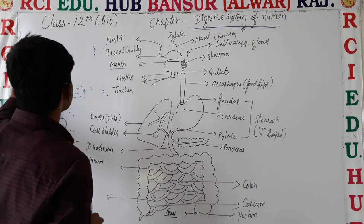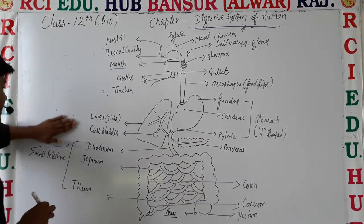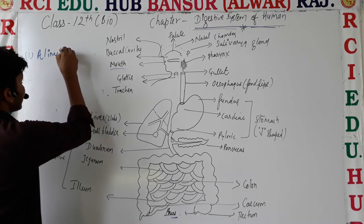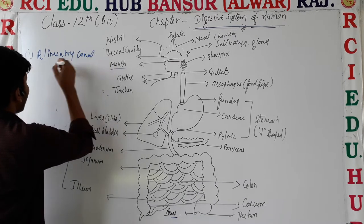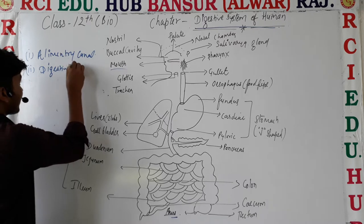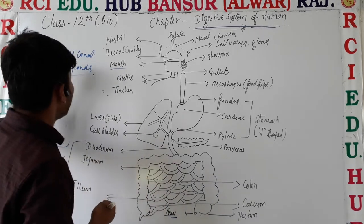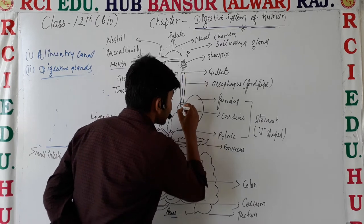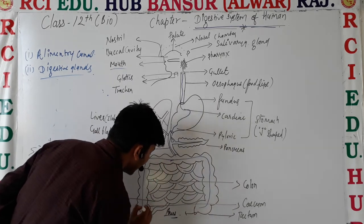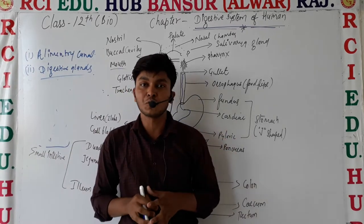The digestive system is basically divided into two parts. Number one is the alimentary canal, and number two is the digestive glands. The alimentary canal is a long tube-like structure in the digestive system.